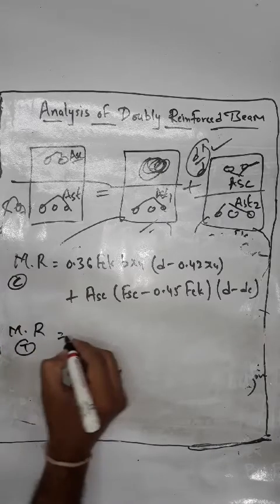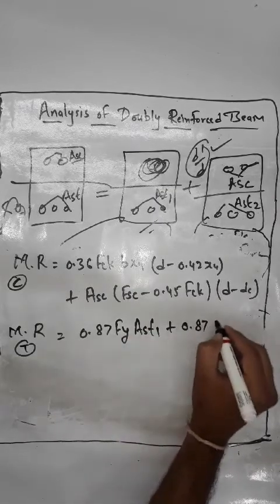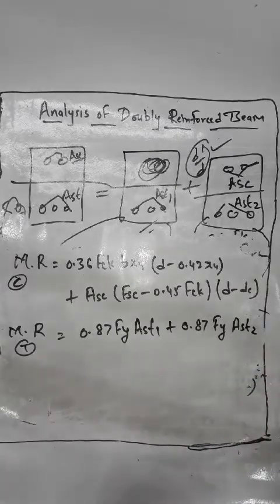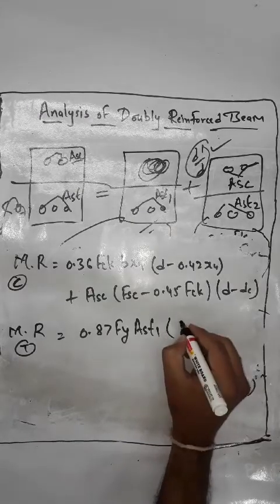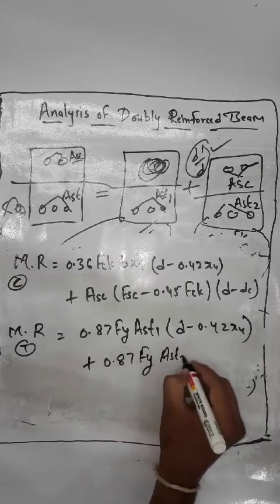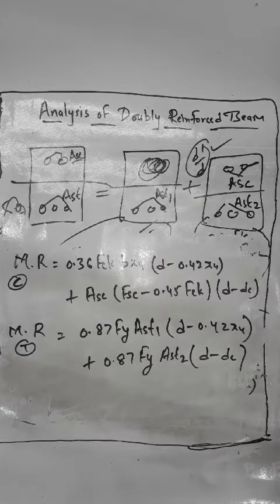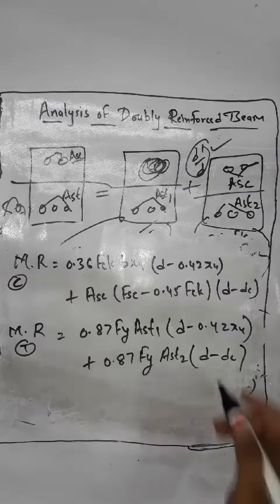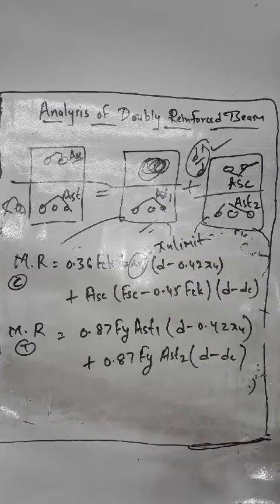The tension side moment of resistance formula is: MR = 0.87·Fy·AST1·(D − 0.42·XU) + 0.87·Fy·AST2·(D − DC). For the balanced condition, replace XU with XU,limit. These are the equations used for solving doubly reinforced beam problems.